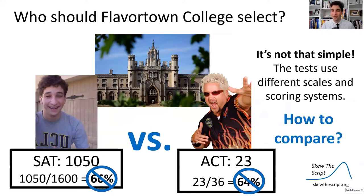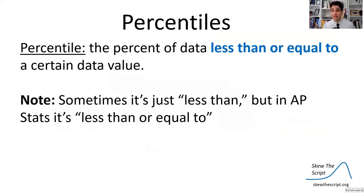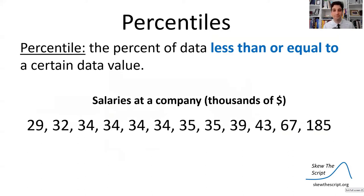So how can we compare these performances? That's where percentiles come in. Percentiles are the percent of data that are less than or equal to a certain data value. Note: this definition is sometimes just 'less than' outside of AP Stats, but in AP Stats it is always 'less than or equal to.'